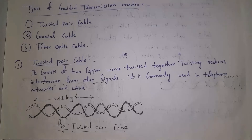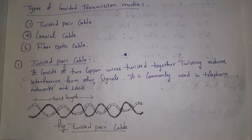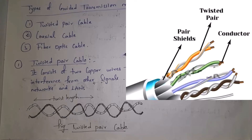This is the twisted pair cable structure. We take two wires with the length we want for twisting and we twist those two wires together — this is the structure.